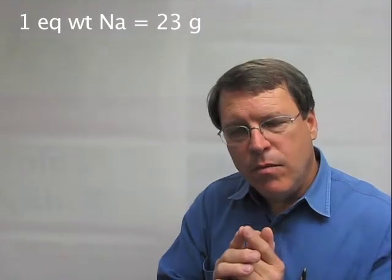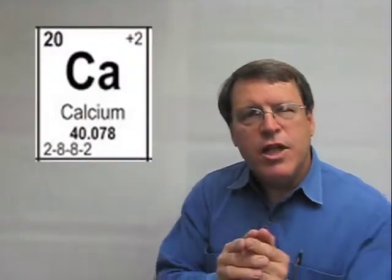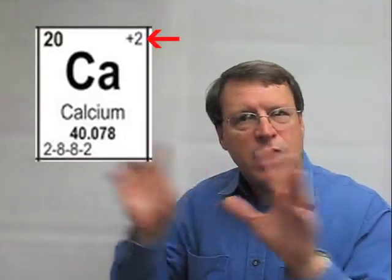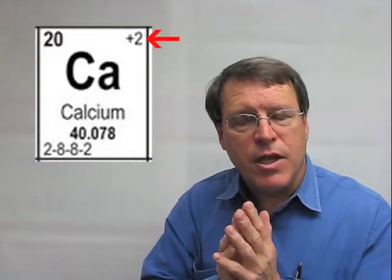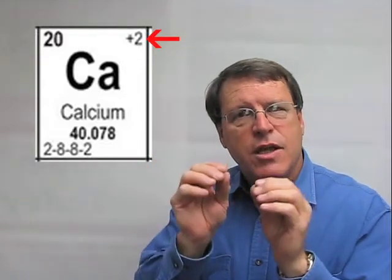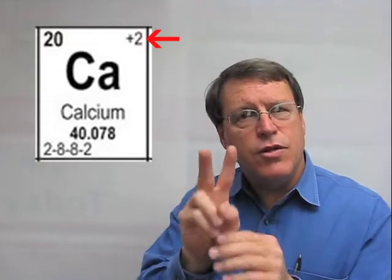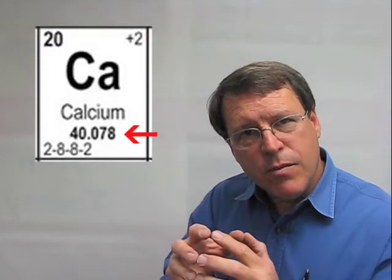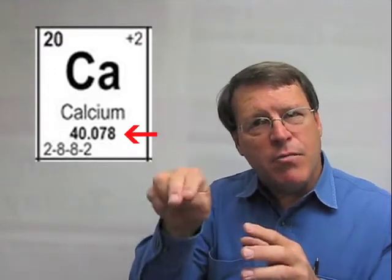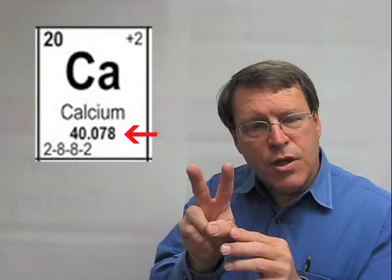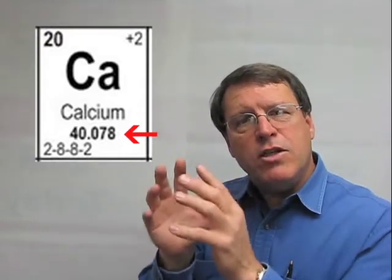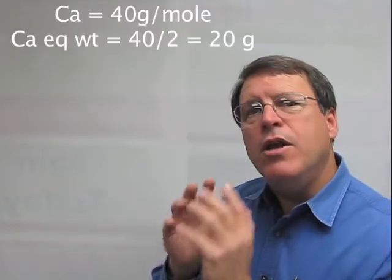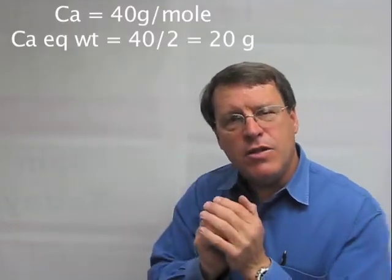23 grams of sodium will deliver one equivalent weight of sodium. Now elements like calcium tend to lose two electrons — that's the reaction taking place — so it has a positive charge of two. When talking about the gram equivalent weight of calcium, we have to take into account that each calcium atom delivers two charges, so the gram molecular weight of calcium is 40, but the equivalent weight of calcium ions would be 20. You divide by the valence, which would be two.